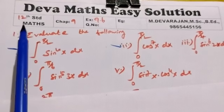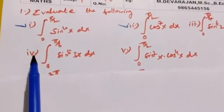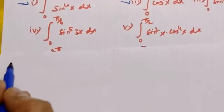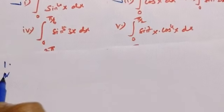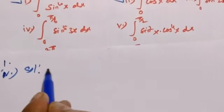This is Deva. Now we are going to see 12th Maths Chapter 9, Exercise 9.6, Problem 1 part (iv). Evaluate the integral from 0 to 5π/6 of sin⁵(3x) dx. First one, fourth one solution.